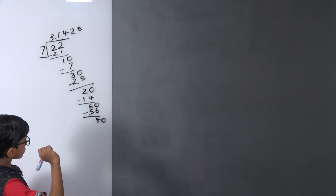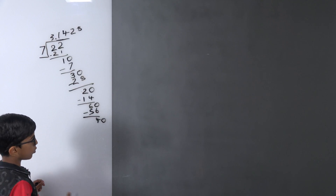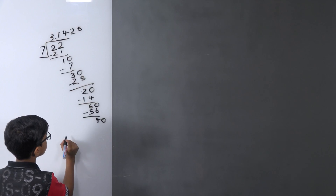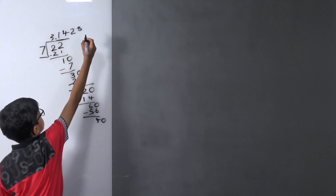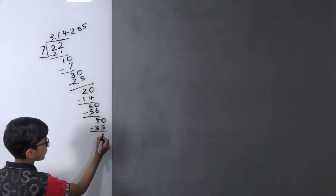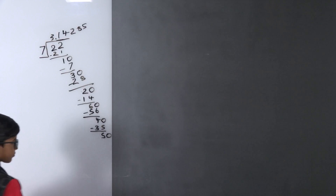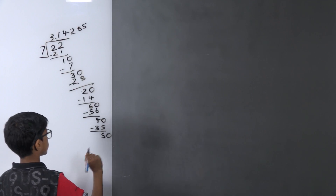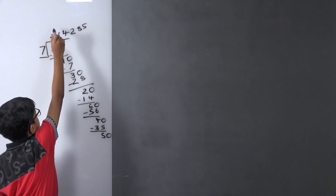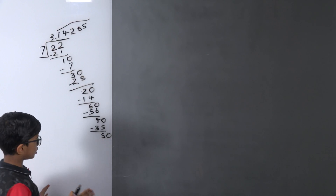Seven threes are 21. We can go further — 28, then 35. Seven fives are 35, we subtract and got 5. We write another zero. This pattern will continue. After some steps we indicate with a notation that this multiple-digit pattern repeats and will go on. Thank you.